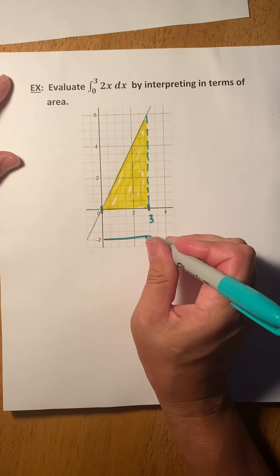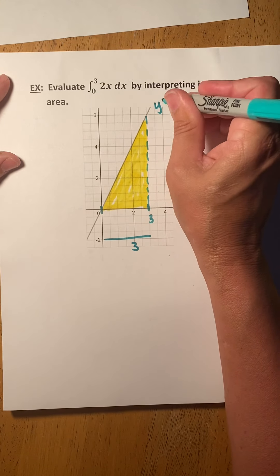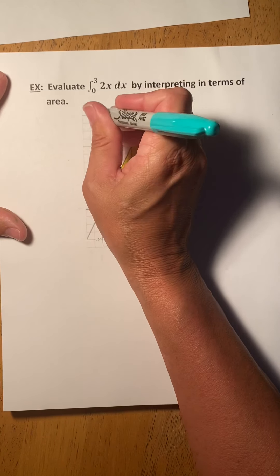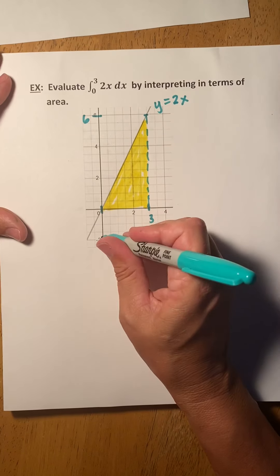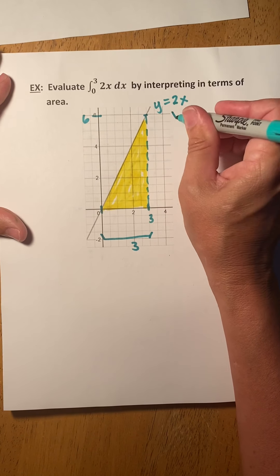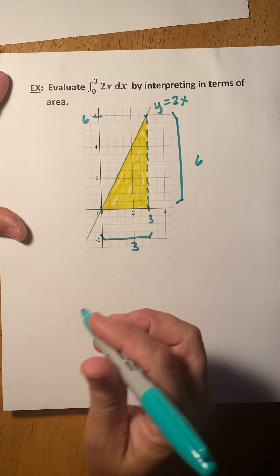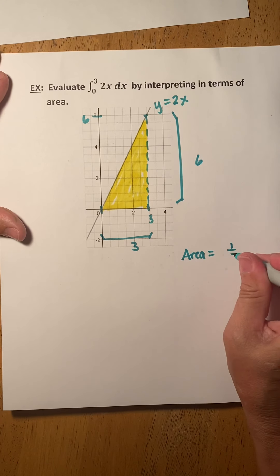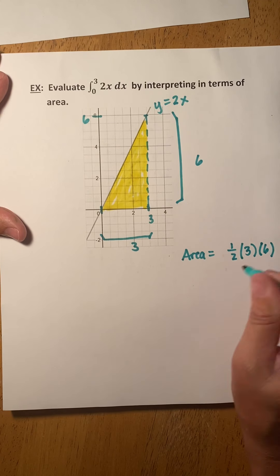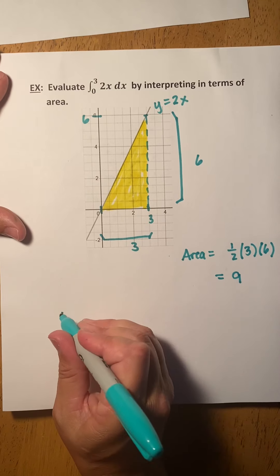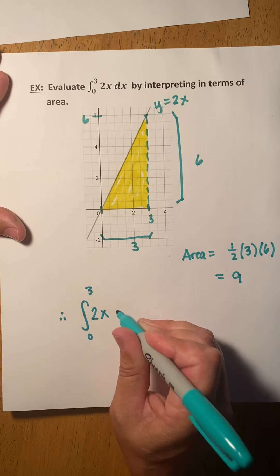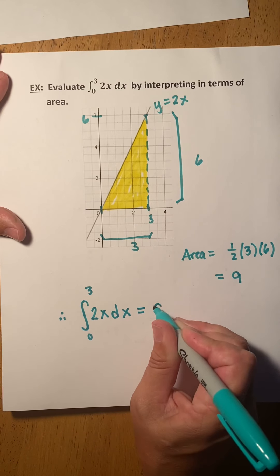The base is 3. This is the function y equals 2x, so at the rightmost endpoint x equals 3, we go up and the output is 6. So the height is 6. The area of this triangle is one-half times the base times the height, which is one-half times 18, which is 9. Therefore, the integral from 0 to 3 of 2x dx is equal to 9.